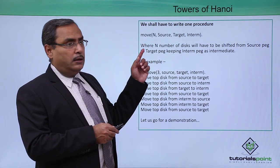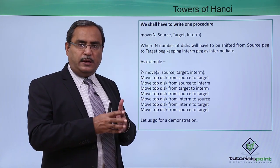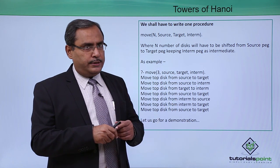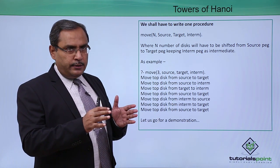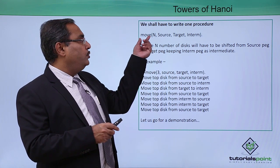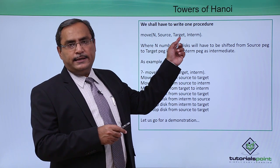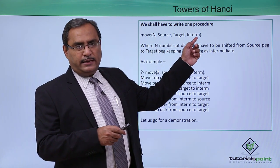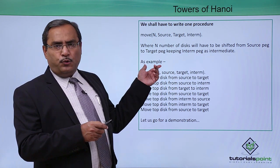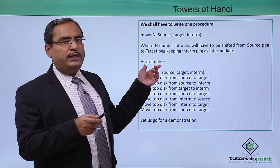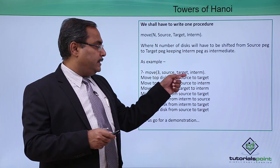Now let us go for the execution. We are supposed to write the respective program code and execute it. The procedure name will be 'move' — move N number of disks from the source to the target keeping the other peg as the auxiliary one. If we execute our program with n equal to 3, move(3, source, target, intermediate), these are the moves suggested.